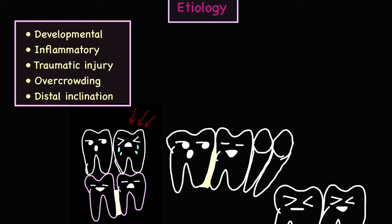The third etiological factor is traumatic injury. In the event of trauma, the permanent tooth bud might get displaced from its original position. When the tooth buds are developing they are very sensitive to any kind of trauma, and any traumatic injury may predispose to concrescence. In cases of traumatic injury, there is an impact on the milk tooth, and through the roots such impact is transferred to the developing tooth bud which is present between the roots of the milk tooth, and this might lead to concrescence.